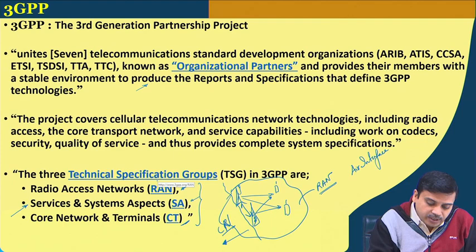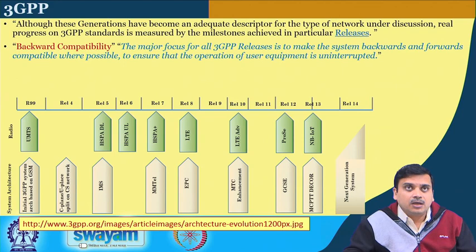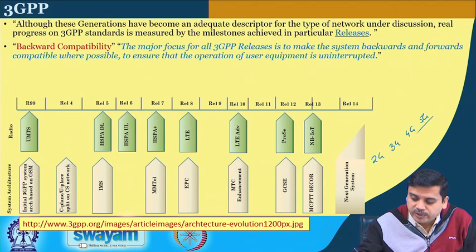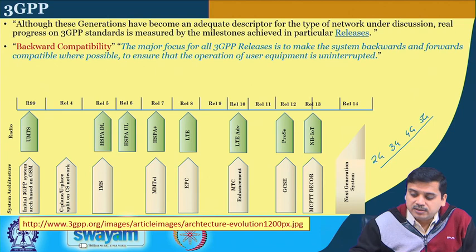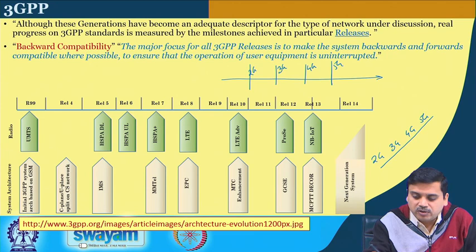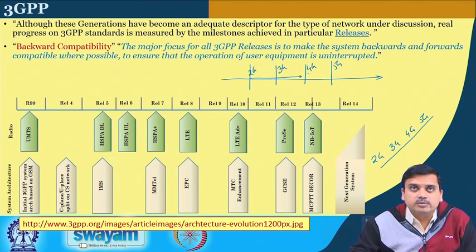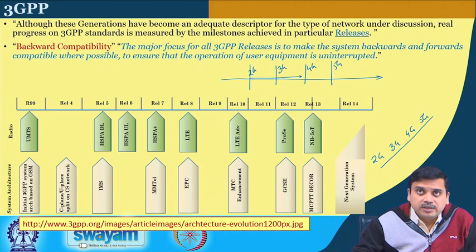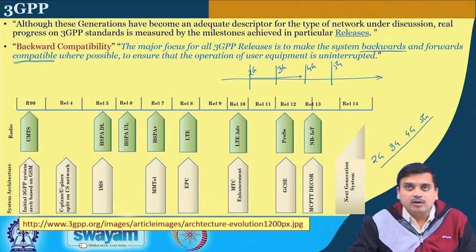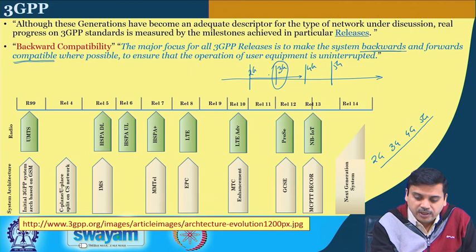Looking again at 3GPP, these generations — 2G, 3G, 4G and 5G — do not come just like that. It is not a sudden release where at some milestone you suddenly reach 2G, 3G, 4G or 5G. Rather it is a continuous evolution from one stage to another, which is what 3GPP primarily aims at. Amongst other major things, it also says that backward compatibility as well as forward compatibility is very, very important because it is a continuously evolving technology.